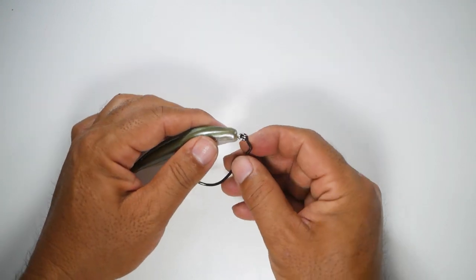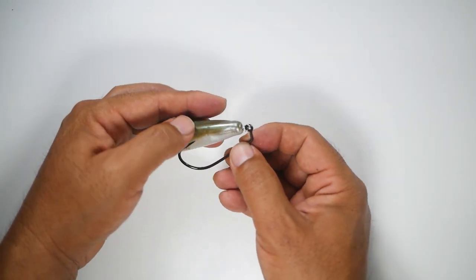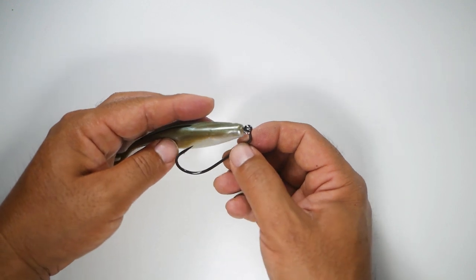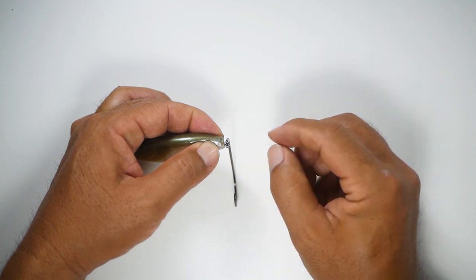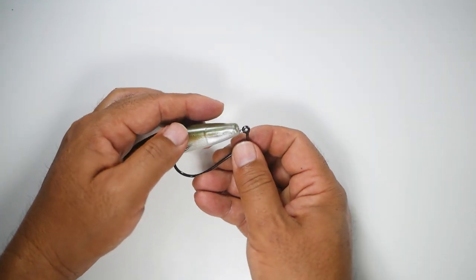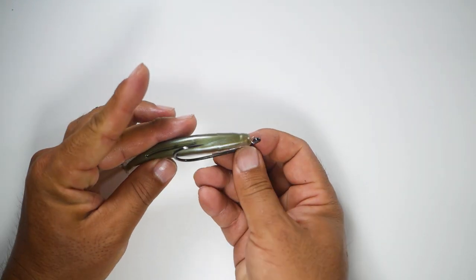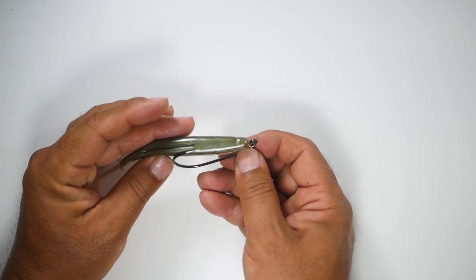And we want to make sure that the hook is running freely in the correct side. And you'll do that by adjusting the corkscrew eye so it's perpendicular. And that means it will run straight up and down along the back of the bait there.